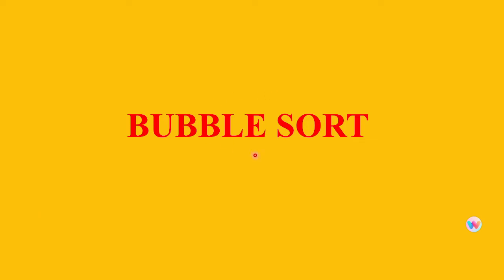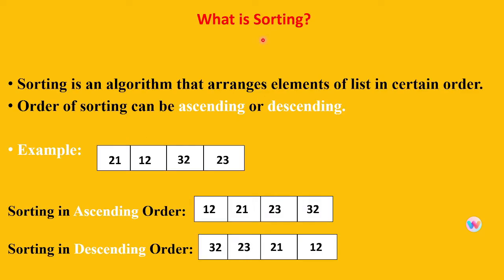In today's lecture we are going to learn about bubble sort. First we will see what is sorting. Sorting is an algorithm that arranges elements of a list in a certain order. The order of sorting can be two ways: ascending or descending. For example, consider this array: 21, 12, 32, 23 — all are of type integer, so they can be stored in one single array variable.